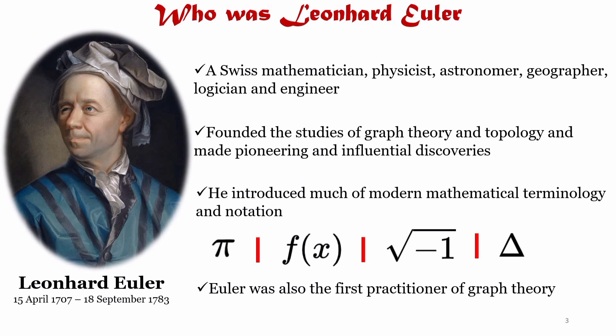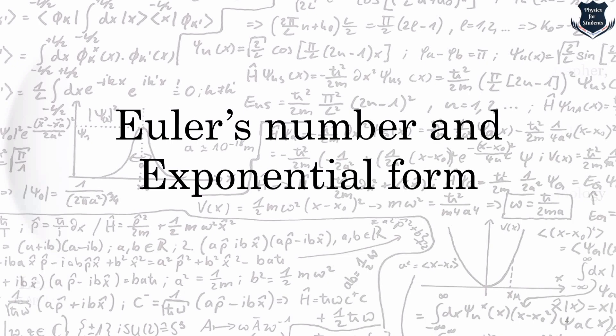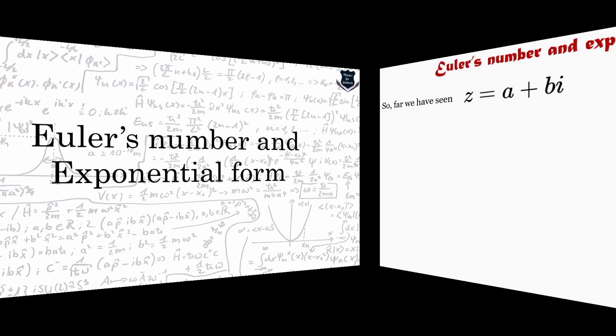As you can see, Euler lost one of his eyes in a malady but it did not stop him from exploration in his mathematical journey.